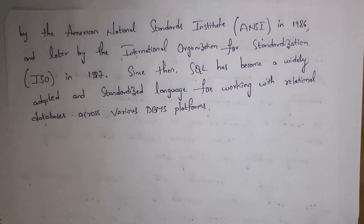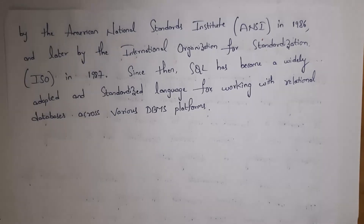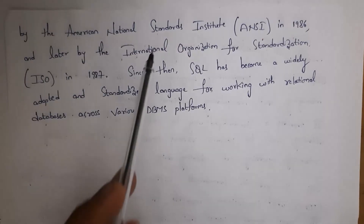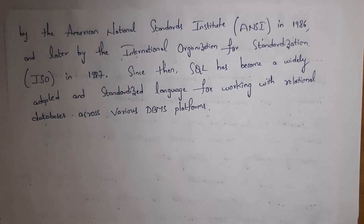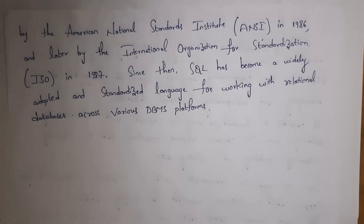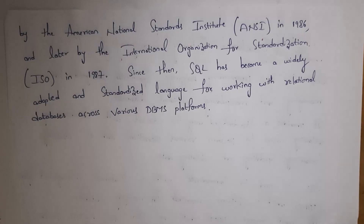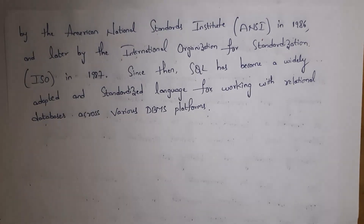SQL was then published as a standard by the American National Standards Institute (ANSI) in 1986, and later ISO — the International Organization for Standardization — published it in 1987. From that day onwards, SQL became the standard language, and many DBMS softwares use SQL to work with relational databases, where data is stored in the form of tables — rows and columns.